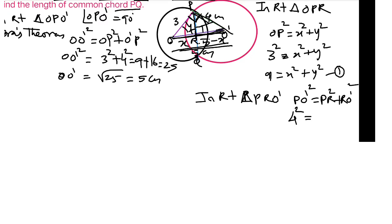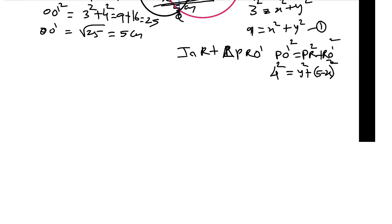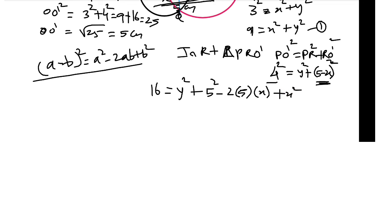In right triangle ΔPRO', PO' square equals PR square plus RO' square. So 4 square is 16 equals y square plus, this is a minus b to the whole square equals a square minus 2ab plus b square. Using this identity...